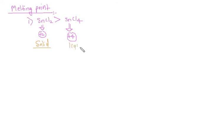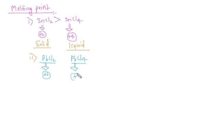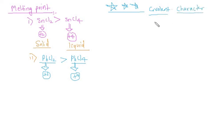The second example is PbCl₂ vs PbCl₄. In PbCl₂, lead is in the +2 oxidation state, and in PbCl₄ it is in the +4 oxidation state. More covalent character means a lower melting point, so the melting point of PbCl₂ is more. However, an important point: don't just look at covalent character for melting point — also refer to the concept of lattice energy, because exceptional behavior is observed in ionic solids. Be careful while dealing with melting point.